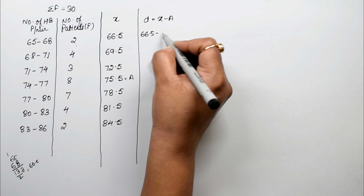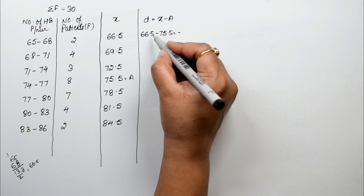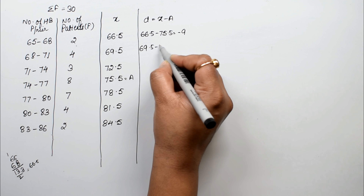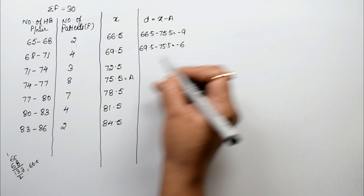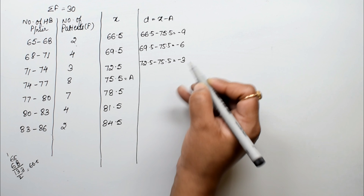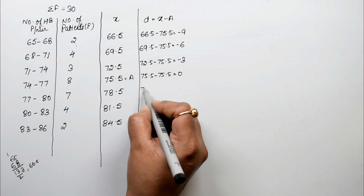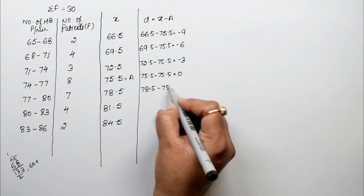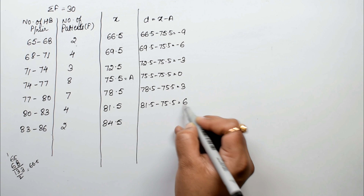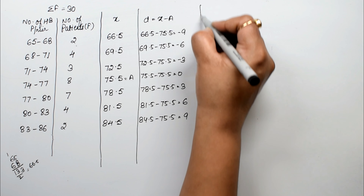The d values are: 66.5 minus 75.5 equals minus 9, 69.5 minus 75.5 equals minus 6, 72.5 minus 75.5 equals minus 3, 75.5 minus 75.5 equals 0, 78.5 minus 75.5 equals 3, 81.5 minus 75.5 equals 6, and 84.5 minus 75.5 equals 9.